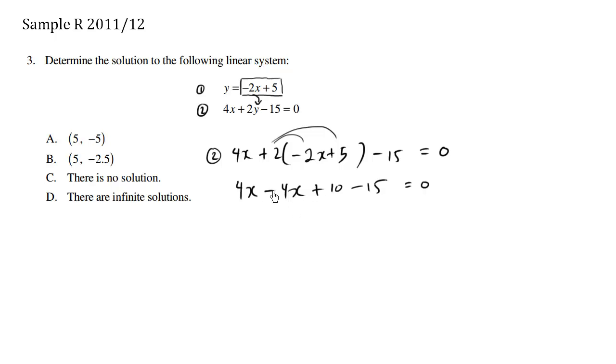So what we have here is 0x. Now, 10 minus 15 is negative 5. Negative 5, when I move it over, becomes a 5.